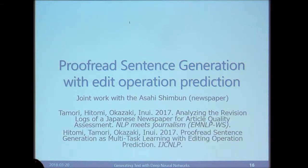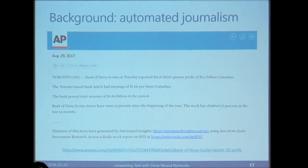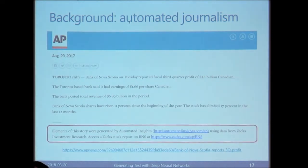Any questions so far? Okay, now I move to the second topic: proofread sentence generation with edit operation prediction. This is a collaborative work with Asahi Shimbun, a Japanese newspaper company. Here is an article published by Associated Press — it explains the earnings of a bank, and a note states the article was generated by Automated Insights using data from Zacks Investment Research. So this article was generated automatically from a data source.